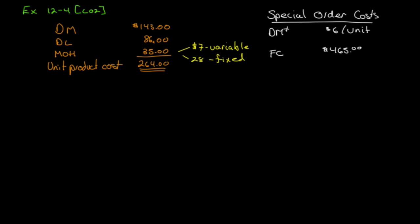Exercise 12.4: evaluating a special order. Sato Jewelers has received a request for a special order of 10 gold bangles for members of a wedding party. The normal selling price of a gold bangle is $389.95 and its unit product cost is $264. Most of the manufacturing overhead is fixed and unaffected by variations in production volume; however, $7 of the overhead is variable depending on the number of bangles produced, meaning $28 is fixed.